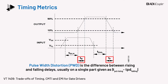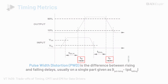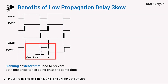When considering non-isolated gate drivers, if an external isolator is used, add that time as well. Theoretically, propagation delay and PWD can be compensated in a controller, but skew cannot. Low propagation delay skew provides several desirable benefits.